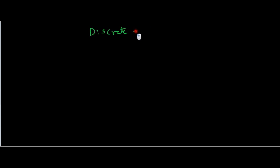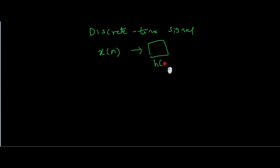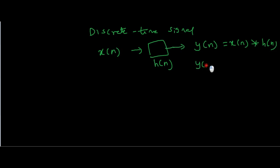Convolution is defined for both continuous time signals and discrete time signals. In this example we will look at the discrete time signal. If the discrete time signal is X(N) and we apply it to an LTI system whose impulse response is H(N), then similar to the continuous time case, we can get the output using the convolution theorem: Y(N) equals X(N) convolved with H(N).